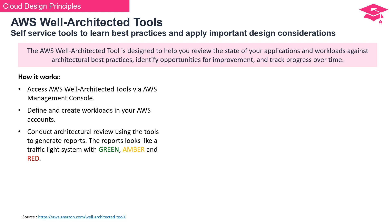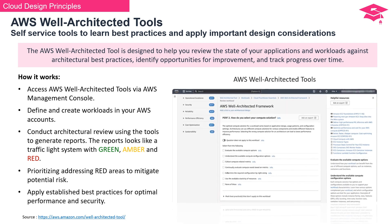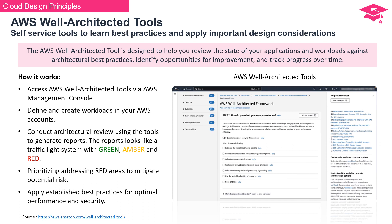Step 3: Engage in a thorough architectural review using the tools, unveiling reports structured like a traffic light system — green for excellence, amber indicating areas for improvement, and red signaling potential risks. Step 4: When it's red, it's time for action — prioritize addressing the red areas promptly to mitigate potential risks before they escalate. Step 5: Implement time-tested best practices to ensure optimal performance and fortify your security measures. The interface mirrors the simplicity and clarity of a screenshot, where simplicity meets sophistication.